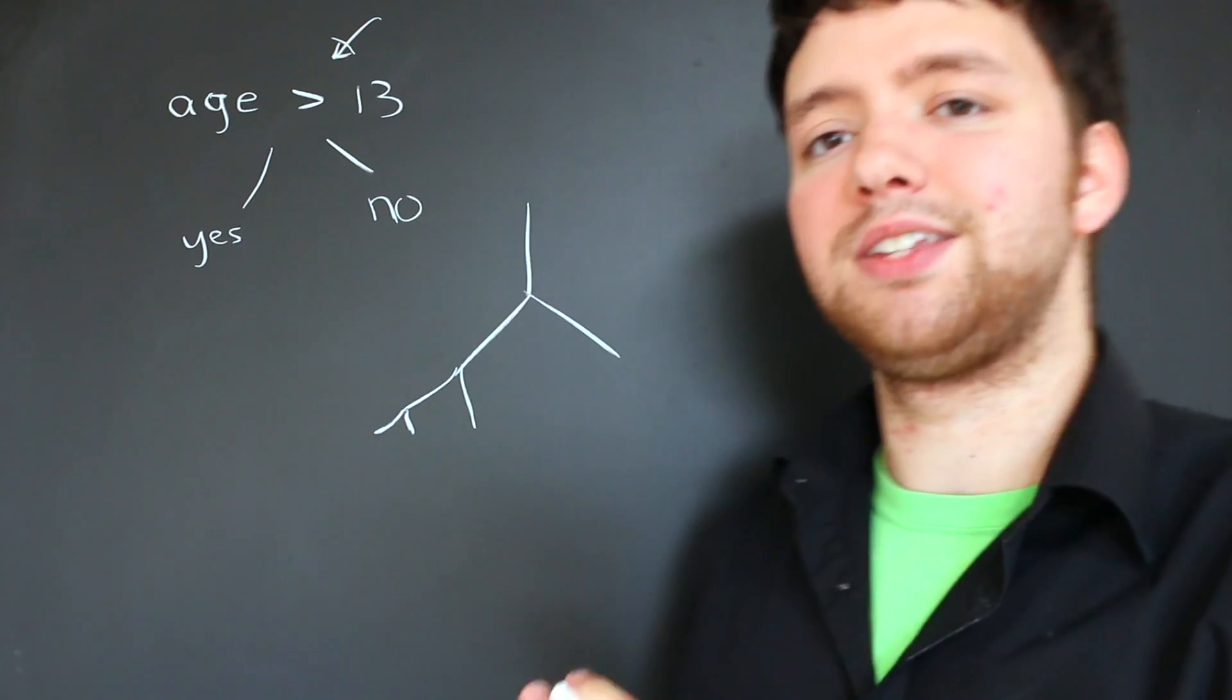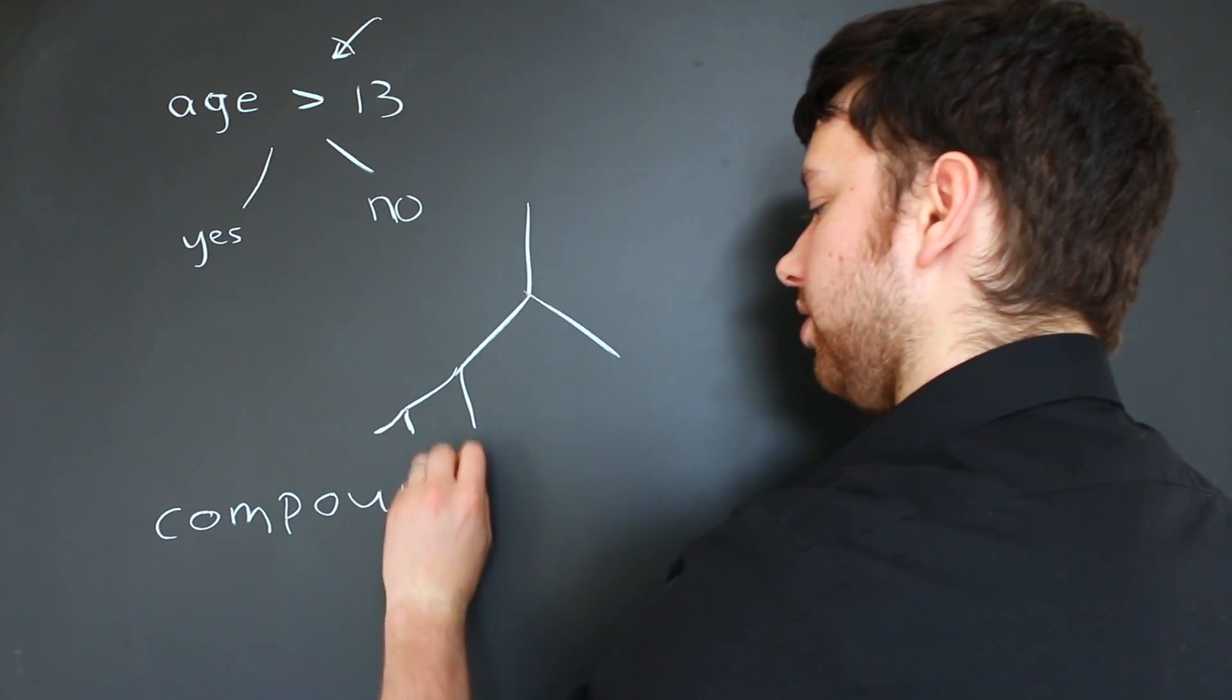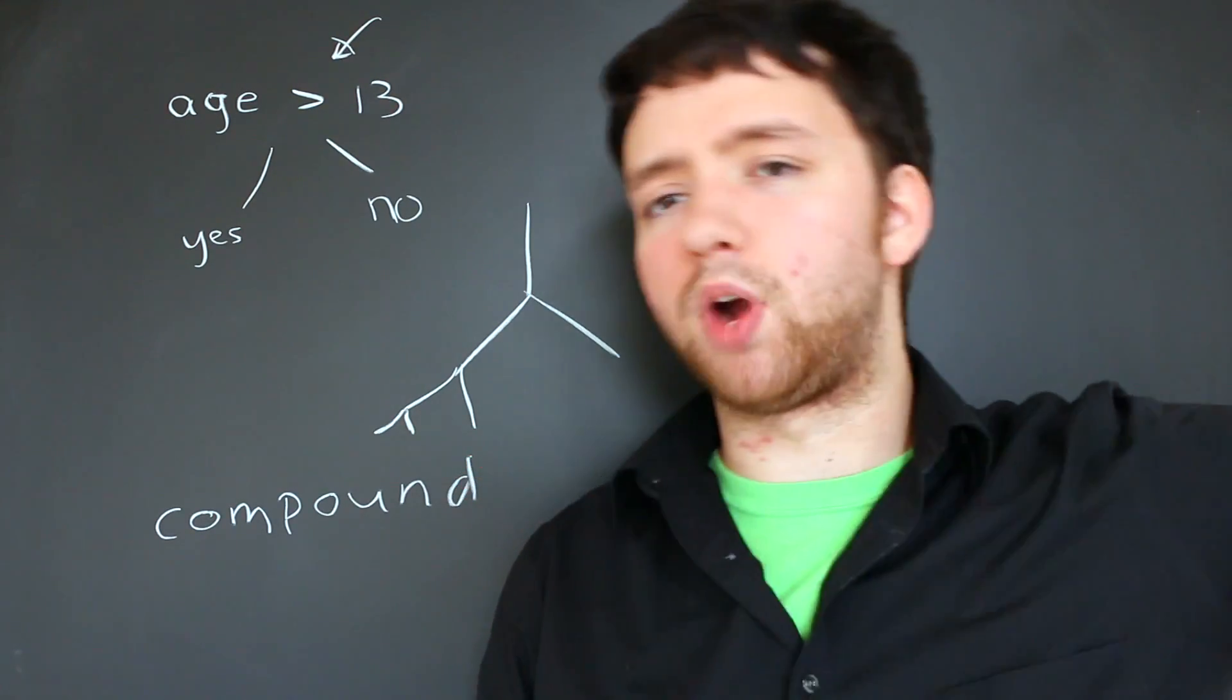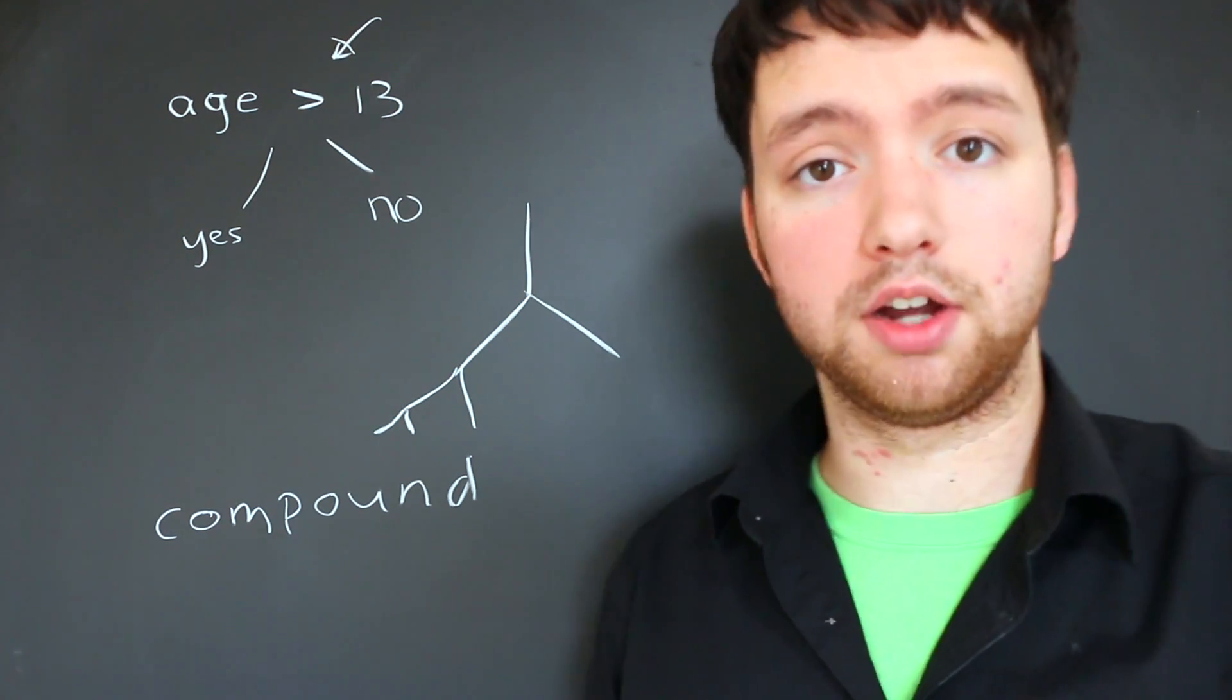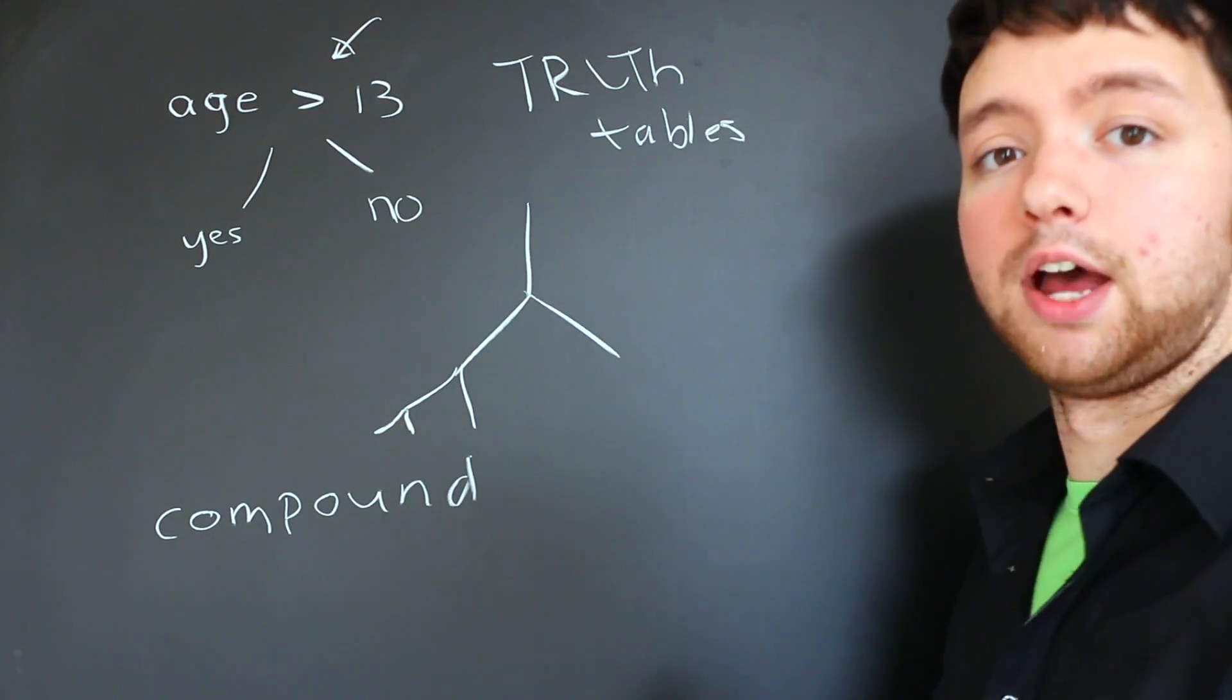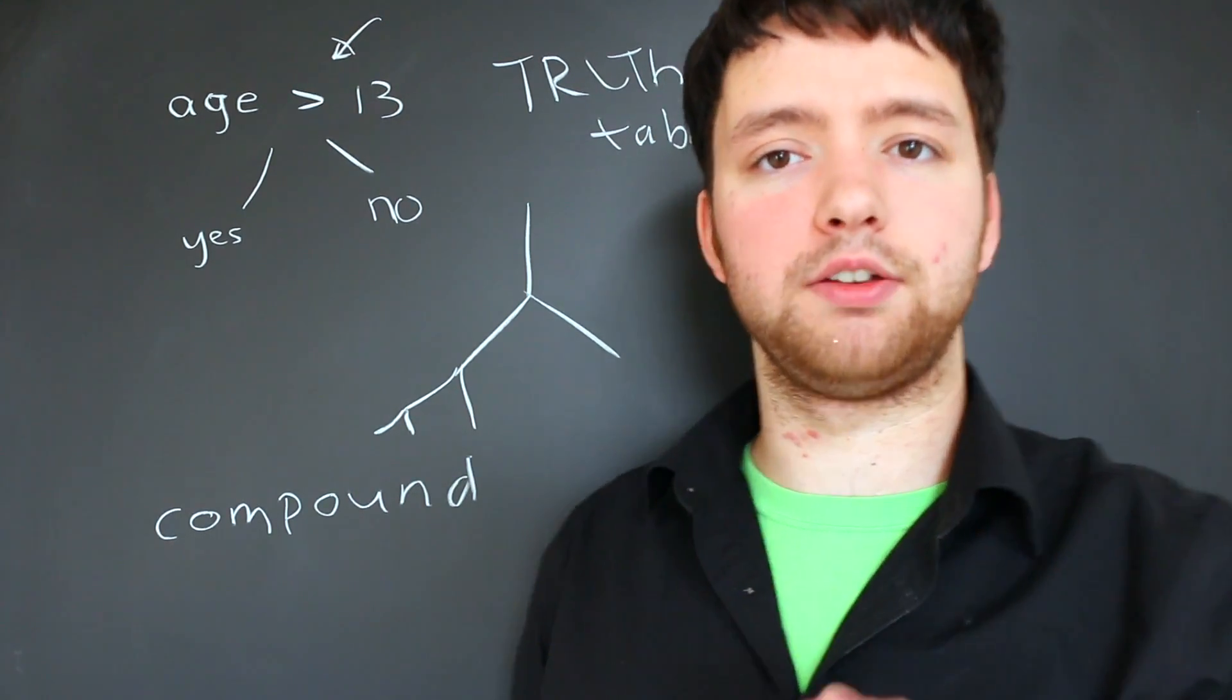But sometimes it's easier to do what's known as a compound expression. So a compound expression is going to ask two questions and combine them together. And it will ultimately come down to true and false. And we can write all this out in what's known as a truth table to visually see what's going on. So let's make a truth table.